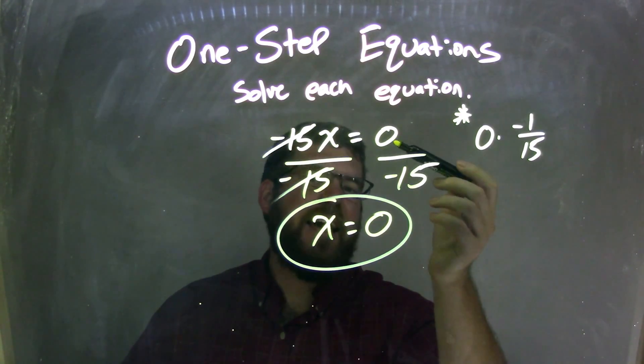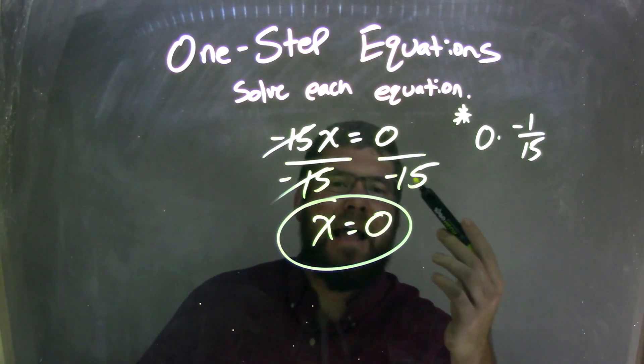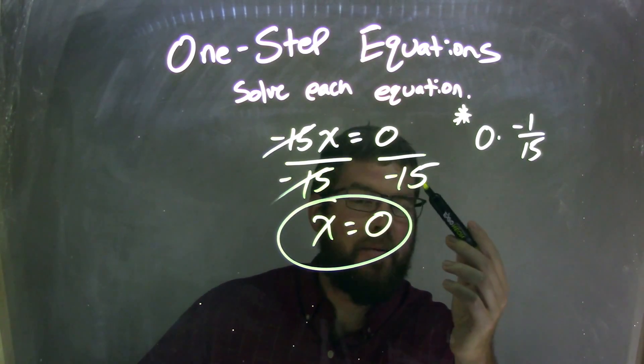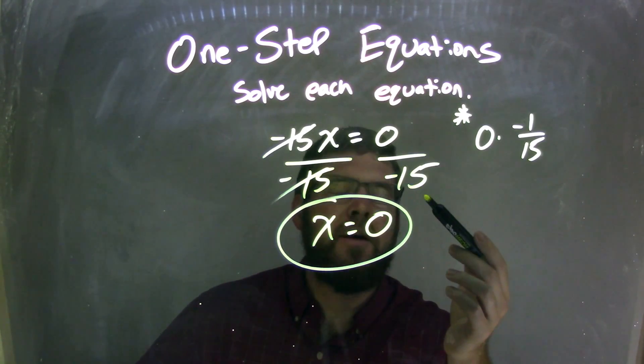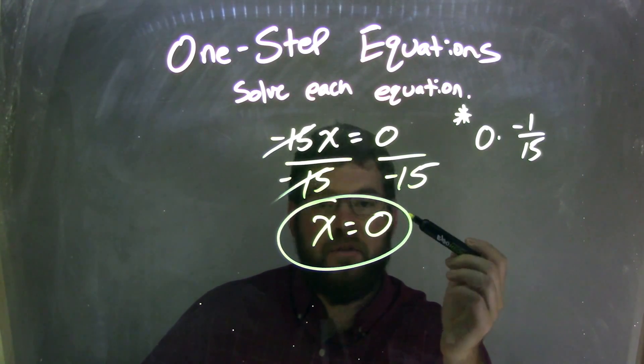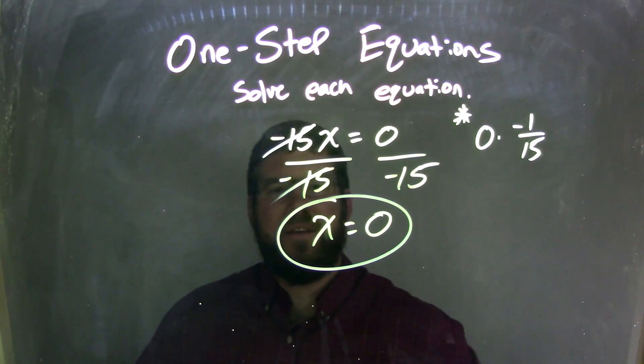We know that 0 divided by any number - any number besides 0 - equals 0. So 0 divided by negative 15 comes out to just be 0, and our final answer is x equals 0.